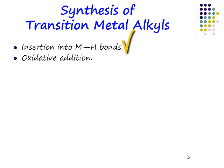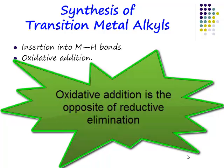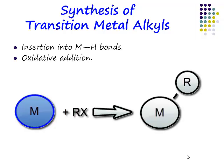You can have insertion into metal hydride bonds, so you can insert an alkene into a metal hydride functionality. Oxidative addition — you can take an alkyl halide and oxidatively add. Oxidative addition is the opposite of reductive elimination. It is where you add a metal alkyl halide and make a new metal-carbon and a new metal-halide bond. Your coordination number increases by two and your oxidation state increases by two — we call that an oxidative addition.